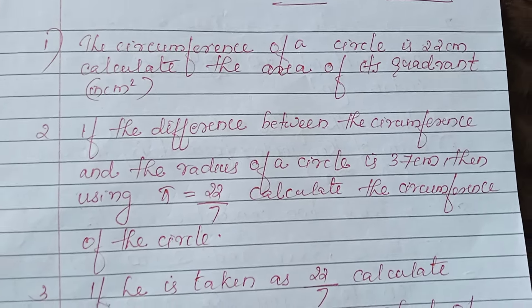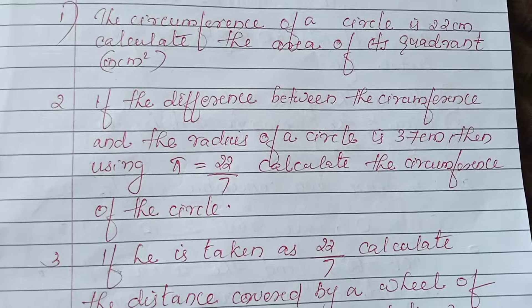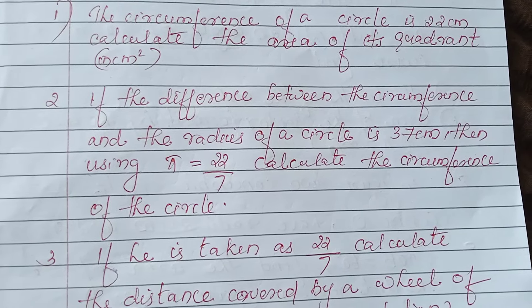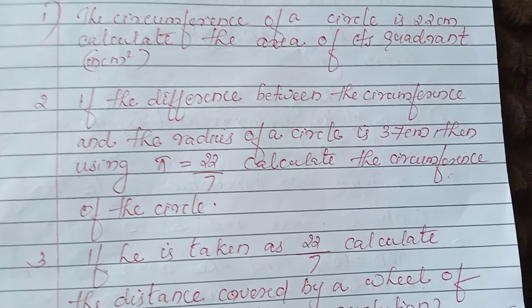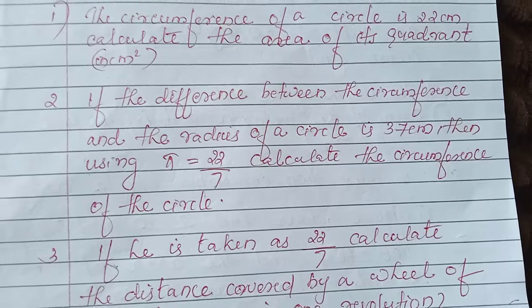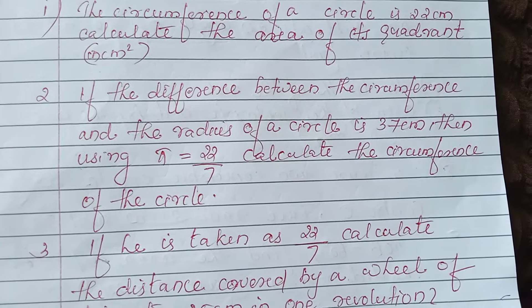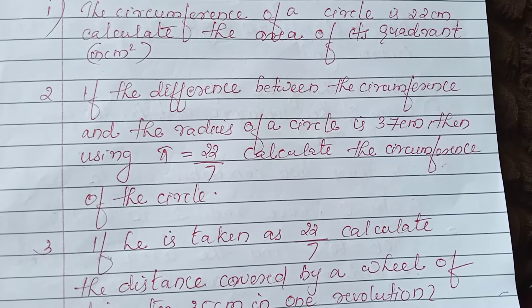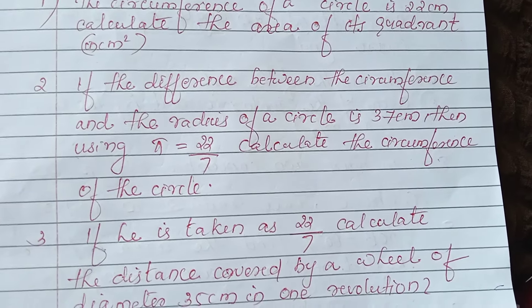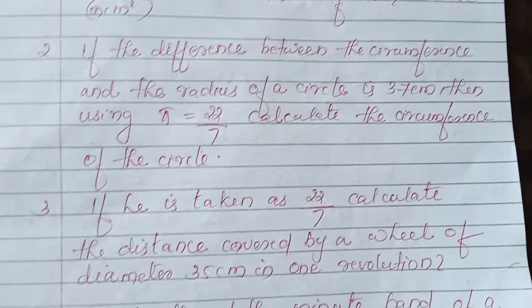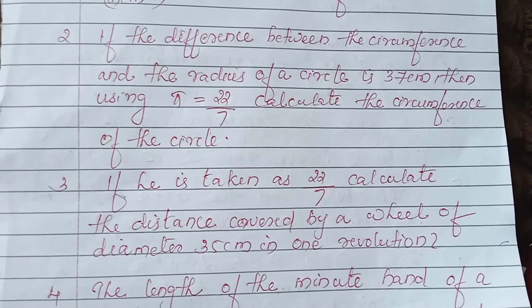Second question: if the difference between the circumference and the radius of the circle is 37 cm, then using pi = 22/7, calculate the circumference of the circle.